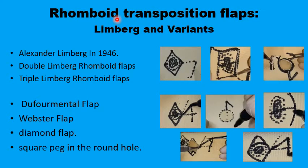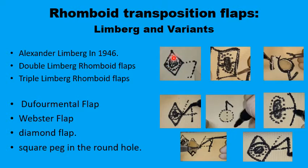Moving now to transposition flaps, starting with the rhomboid transposition flaps. These are a family of flaps with the original description by Limburg and several variants. A circular or square lesion is converted to a rhombic defect. This rhombic defect is an equilateral parallelogram with an angle of 60 degrees at one apex and 120 degrees at the other, so the short diagonal equals the side length. Extended outside, all dimensions are equal, and a line is drawn parallel to one side. Variants include double Limburg, triple Limburg, the deferential flap, the Quaber modification, double Quaber, and the Webster diamond flap modification.